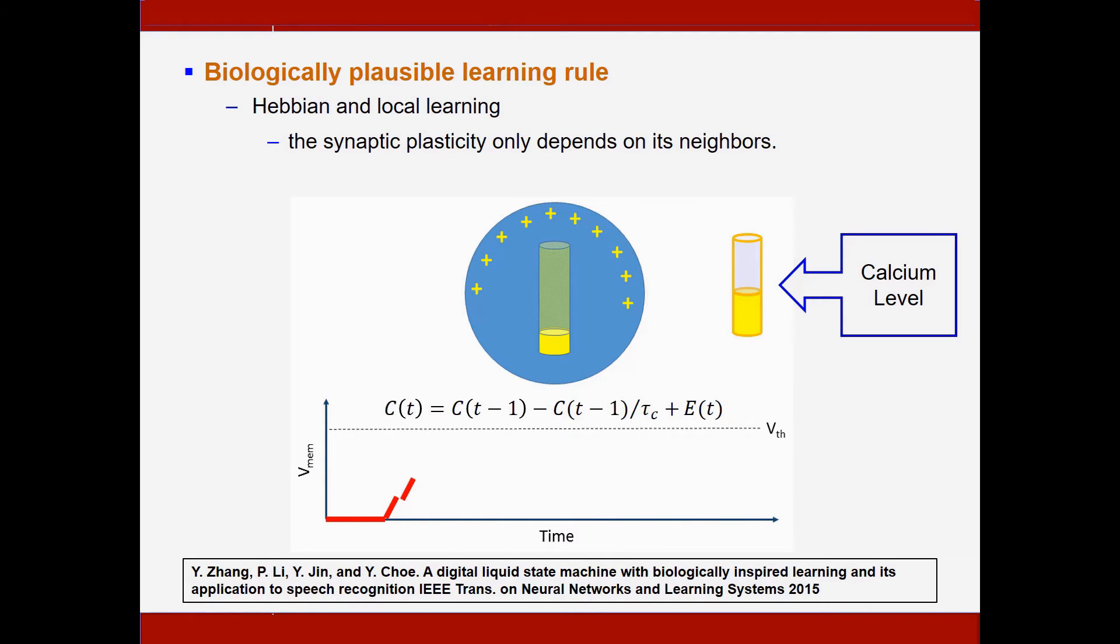And now it's time to talk about the learning or the training of the liquid-state machine. The training of the liquid-state machine is based on a biologically plausible learning rule which applies the Hebbian and local learning. What does that mean? This means that the synaptic plasticity involving maybe two neurons or multiple neurons only depends on its neighbors. And also, the calcium concentration of the neuron is used to characterize the long-term firing activity of this neuron. And the calcium concentration is updated by the equation in the following figure. As we can see, every time the membrane potential reaches a threshold, this neuron fires and its calcium concentration C is increased. If there is no firing activity for a long time, the calcium concentration C will drop over time. So it will help the network to capture the long-term firing activity.